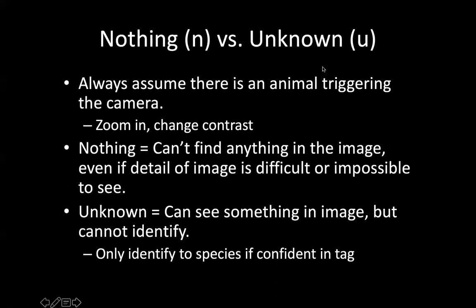The first thing I want to talk about is the difference between nothing and unknown — in the new database it's actually 'empty' and 'unknown.' When we first started this project it was Butler/Indianapolis and Chicago, using Microsoft Access. When we switched to this online platform, we now have about 28 cities in the US and Canada collecting data, and we've all merged the names we give different species. So 'nothing' has turned into 'empty.' If there's absolutely nothing in the photo, tag it as empty. If there's something but you can't identify it, tag it as unknown.